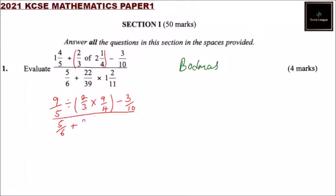this is 22 over 39, and you multiply by, this is 11 times 1, you get 13 plus 2, you get 13 over 11. So we work on this.